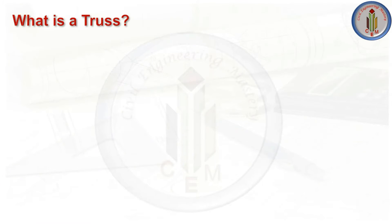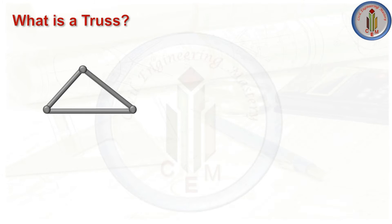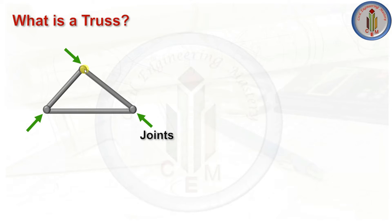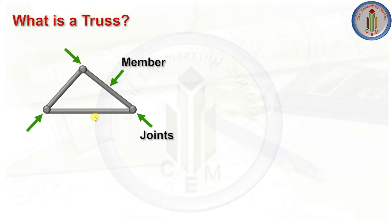Without delay, let's begin. First, what is a truss? A truss is a structural unit made from straight bars that form triangles or other stable rigid shapes. The simplest form of a truss is a single triangle. In a truss we have joints and members. In this simple triangle truss we have three joints and three members.